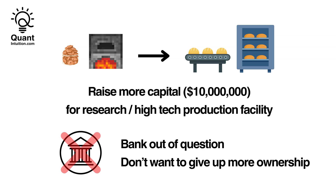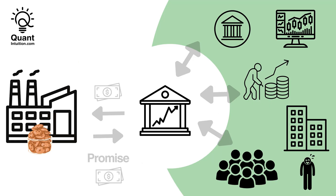Moreover, we want to avoid diluting our ownership by issuing more shares. Note that in the real world, the sums of money for such cases are typically much higher, but the ideas stay the same. So how can we solve this problem? One possible solution would be to borrow from a large pool of people by issuing bonds.